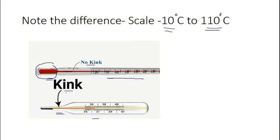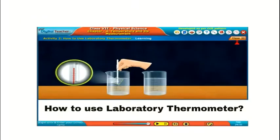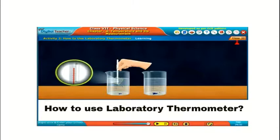The main difference is that there is no kink, and the scale — the range — of the laboratory thermometer is minus 10 to 110 degrees Celsius. You should also know how to place a laboratory thermometer while measuring temperature. It should not touch the surface of the beaker in which the liquid or substance is placed, as there will be increased heat on the surface.